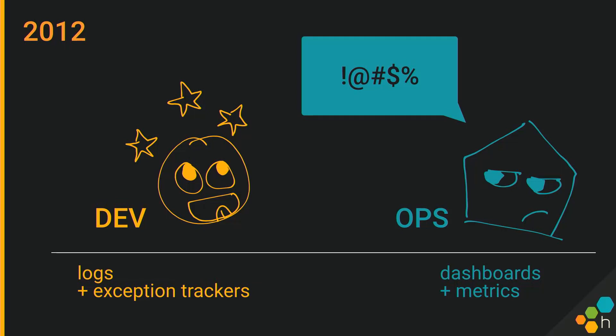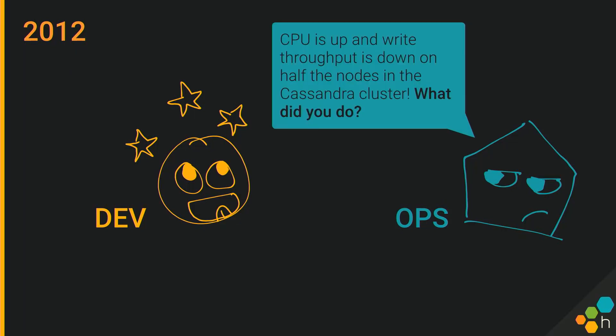This is something I left in for cartoon effect. Let me try to remember some of the words that were coming out of her mouth. It sounded something like: Christine, CPU is up and throughput is down on half the nodes in the Cassandra cluster. What did you do?